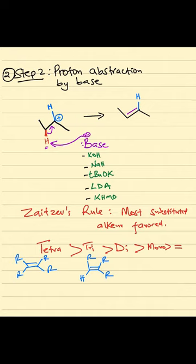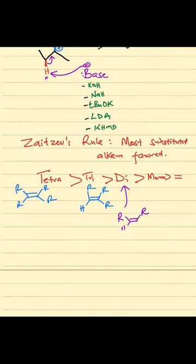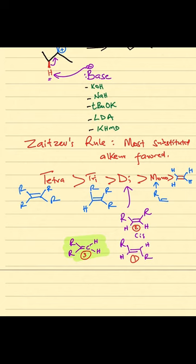Di-substituted has two R groups. You could have the R groups on the same side, so that's a cis-alkene, or you could have the R groups on either side, that gives you a trans-alkene. The most stable of this is the trans, and then followed by the cis. Geminal will be the least stable.